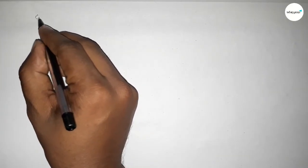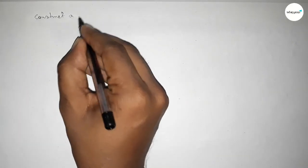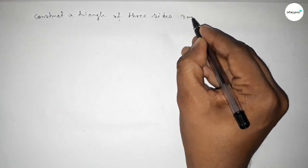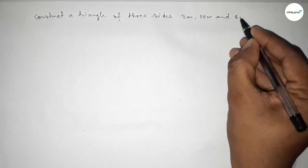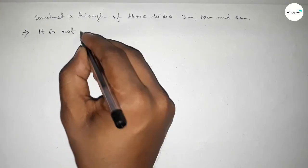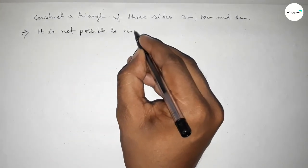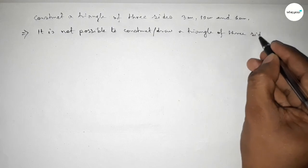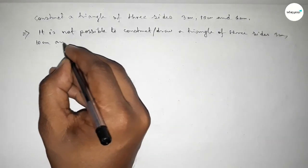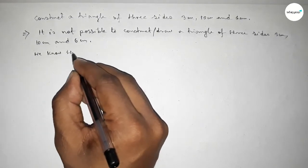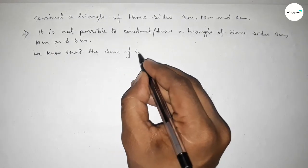Hi everyone, welcome to this class. Today we are discussing how to construct a triangle with three sides: 3 centimeters, 10 centimeters, and 6 centimeters. It is impossible to construct or draw a triangle using these three side lengths.